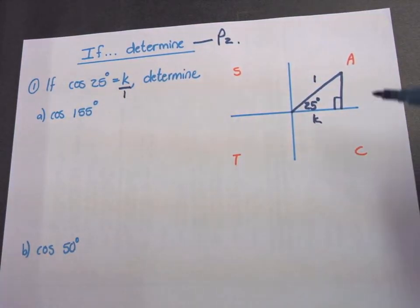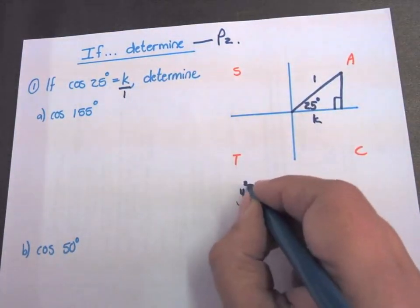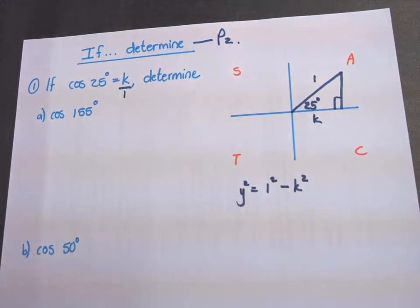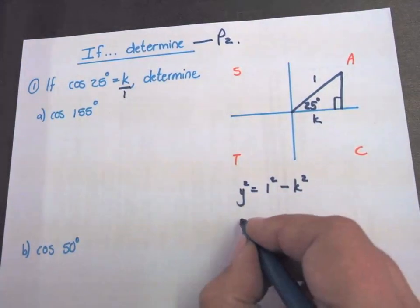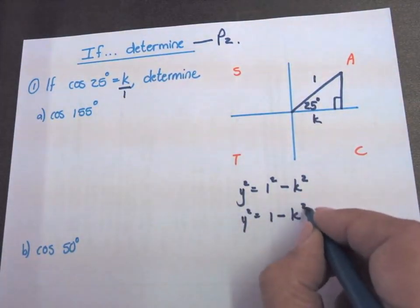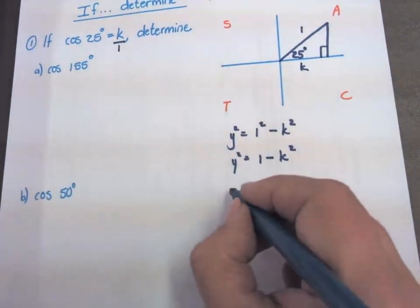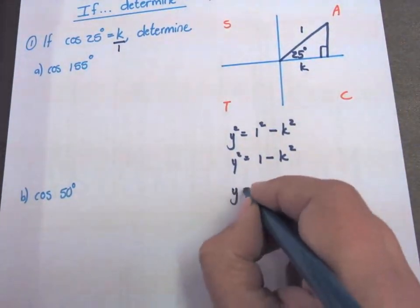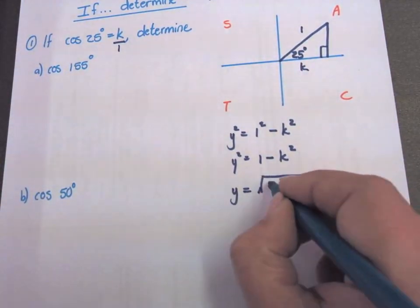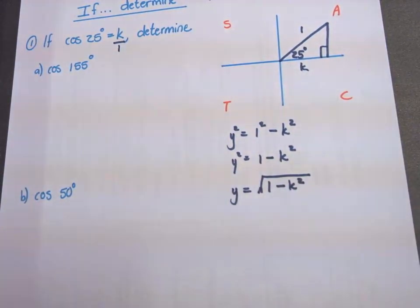Now I have to work out the Y length. And we use Pythagoras. Y squared equals 1 squared minus K squared. So Y squared will be 1 minus K squared. I want Y alone. So I have to get the square root on both sides.